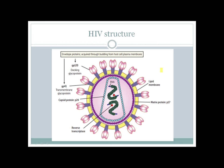Its RNA genome is actually diploid, so it has two RNA molecules. It is a retrovirus because it has reverse transcriptase, which helps it convert its RNA genome into a DNA genome. It has a capsid protein called p24, and it has a membrane which is a lipid bilayer.